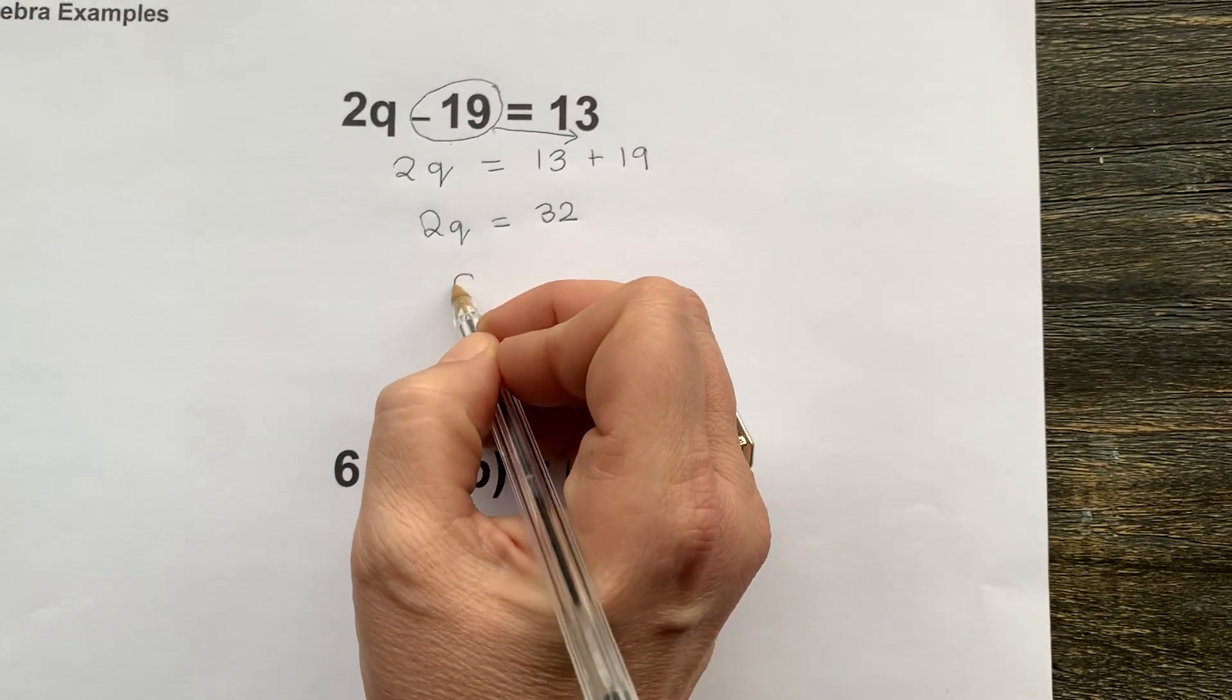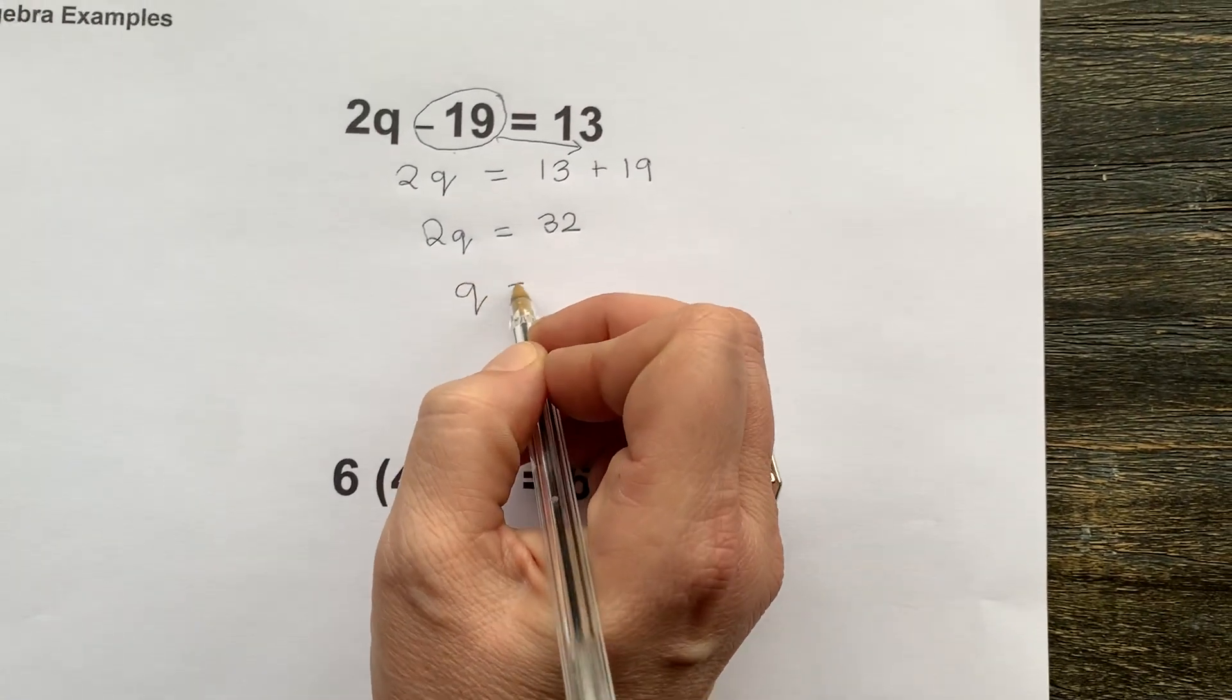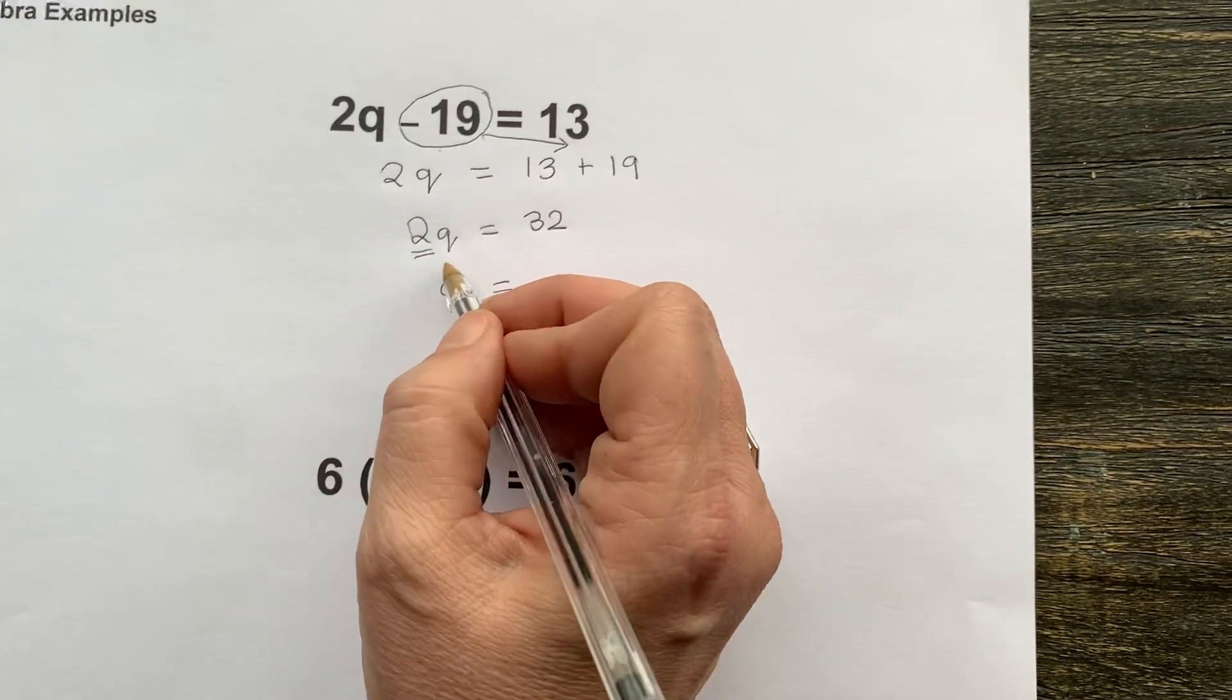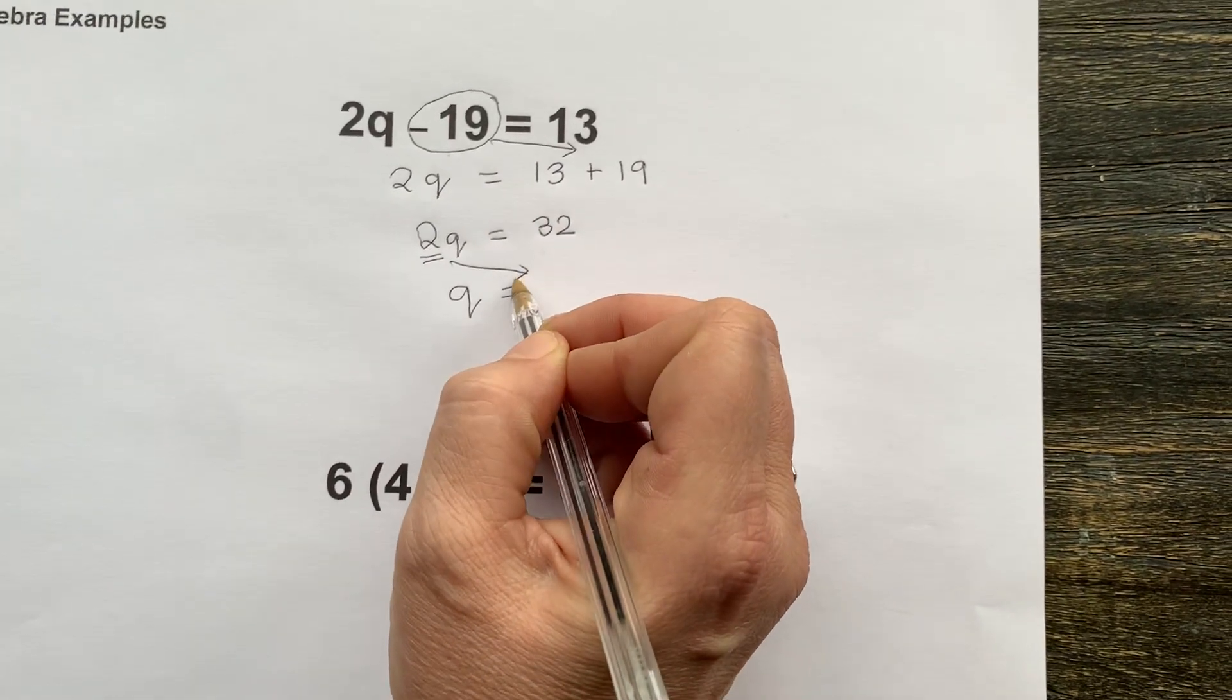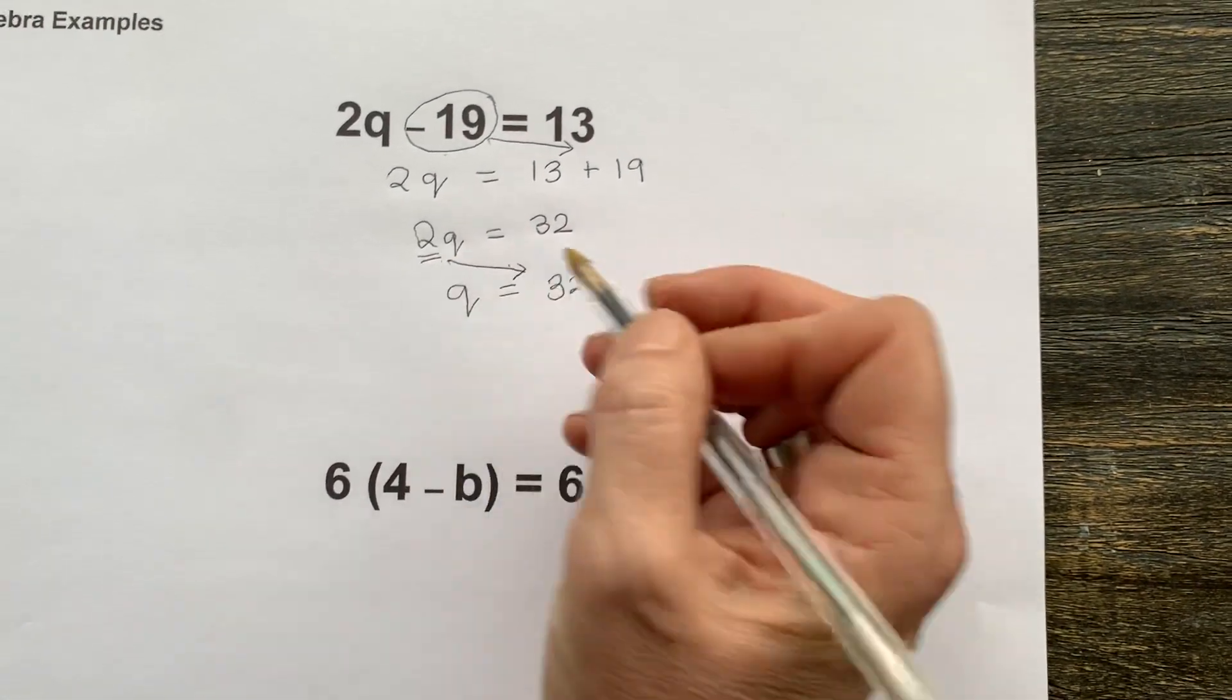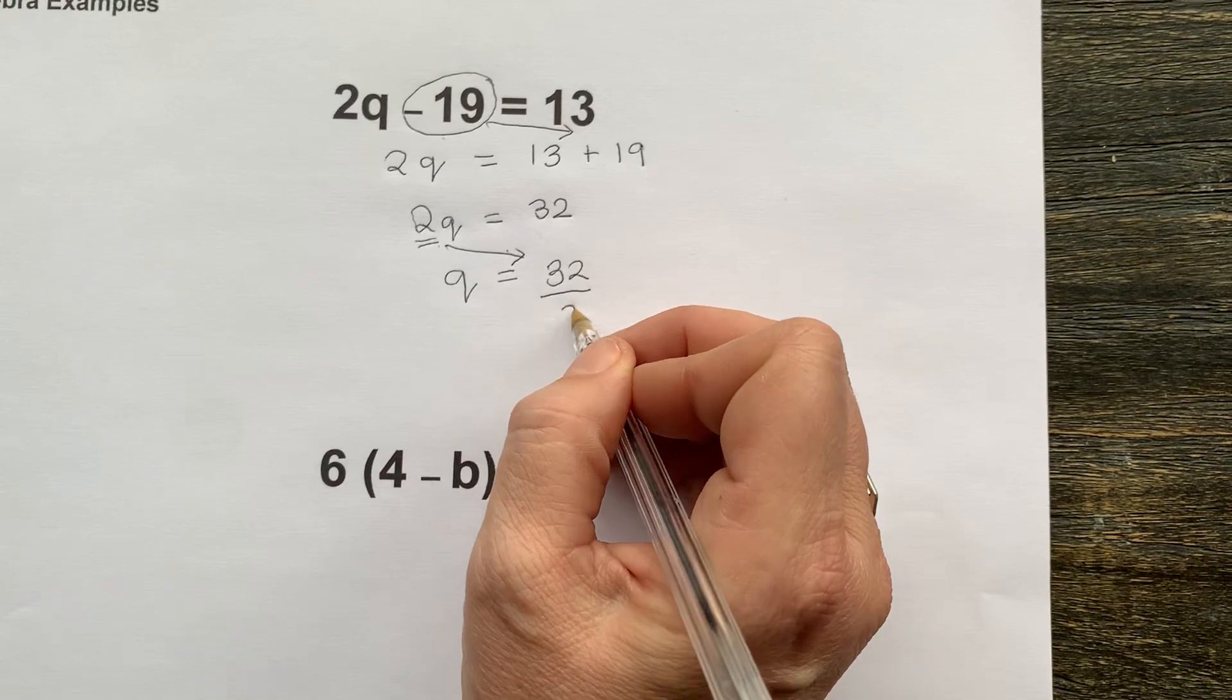Now I need to find the value of q. This 2 is currently multiplying. If I move this across, I would have 32, and instead of timesing by 2, I would be dividing by 2.